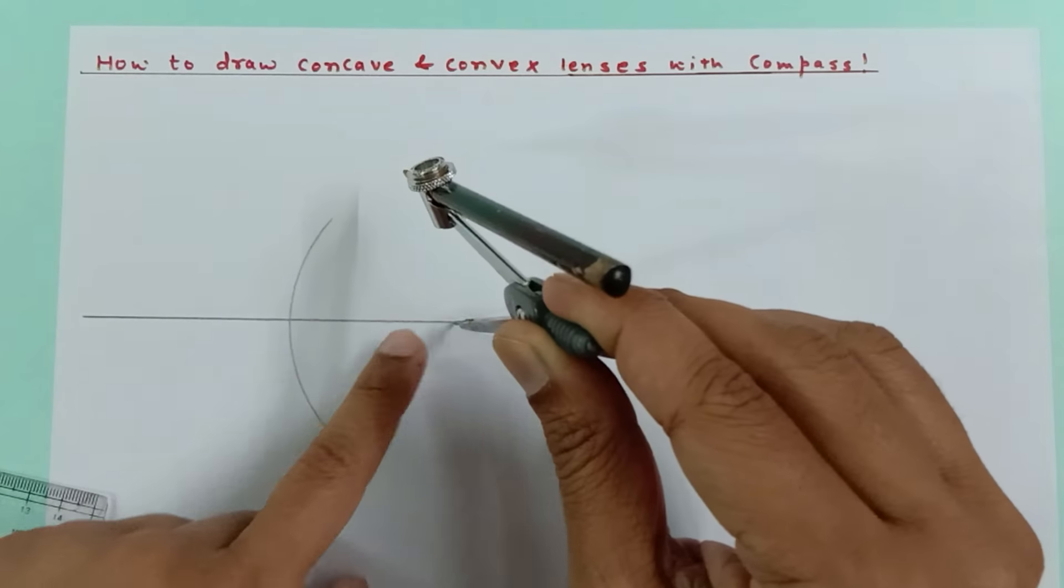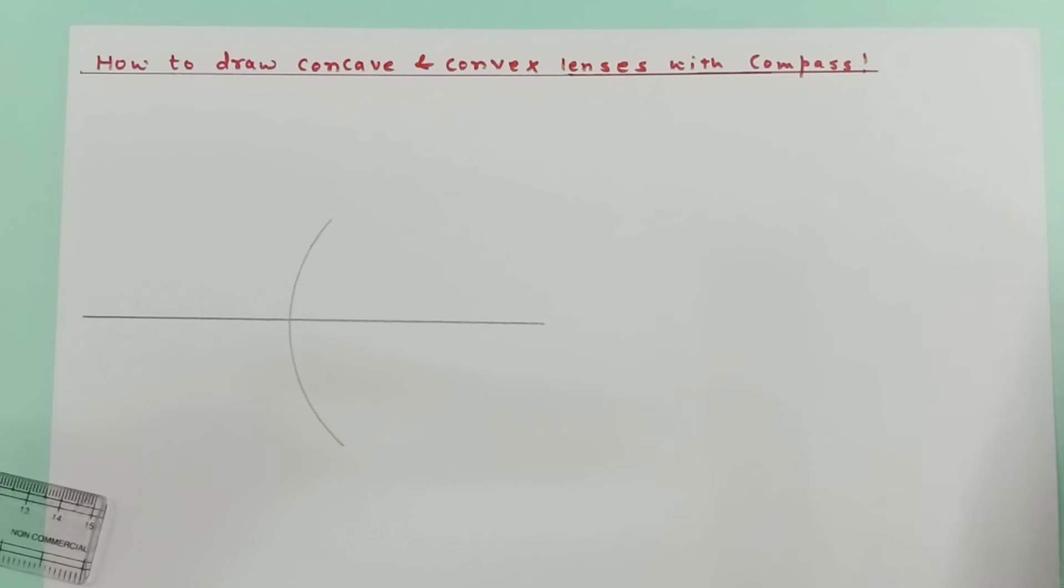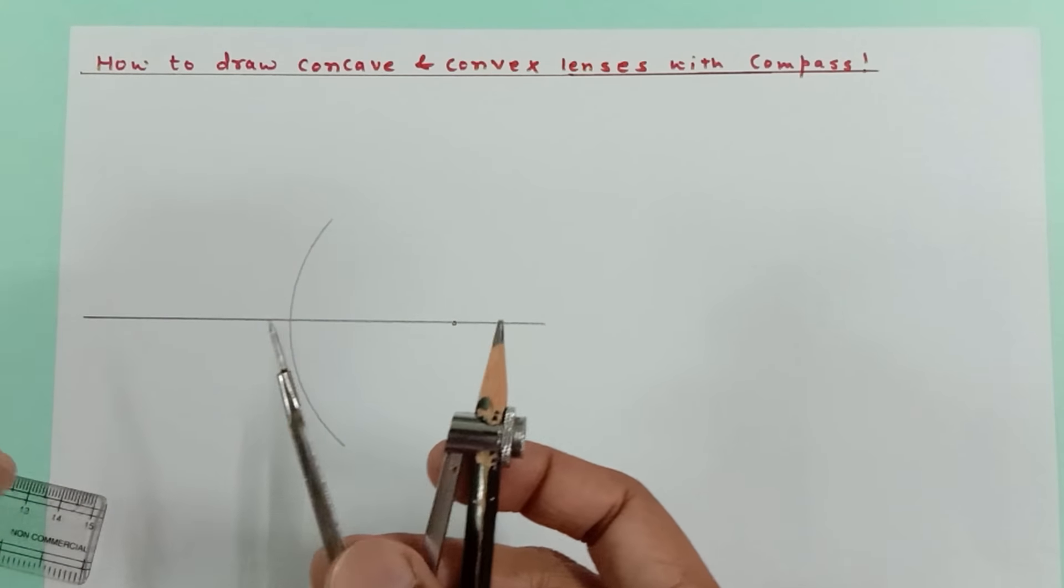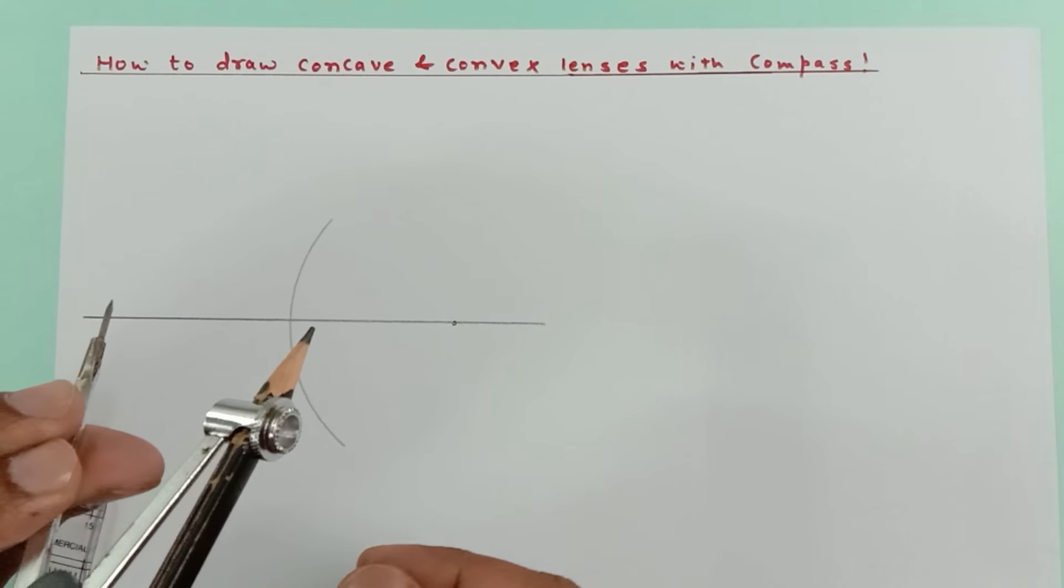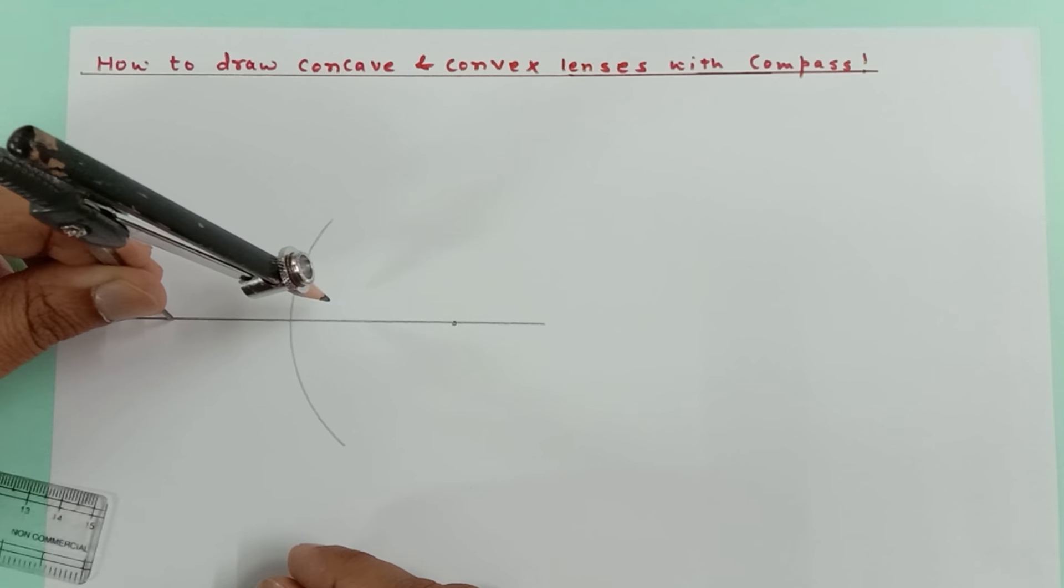And you have to make sure that you remember this point because this is the center, so I'm going to mark this point. Now by taking this same distance on this side, if you want to make the lens thicker...